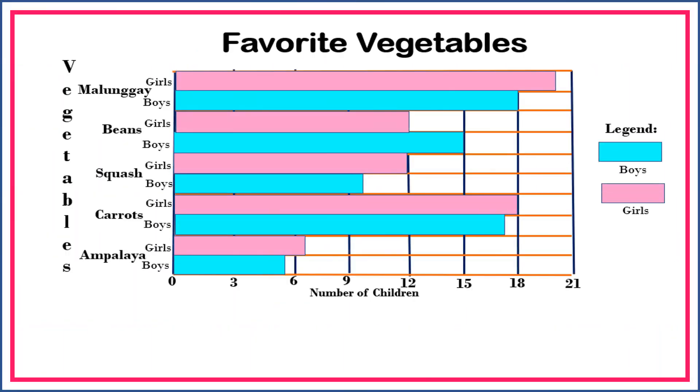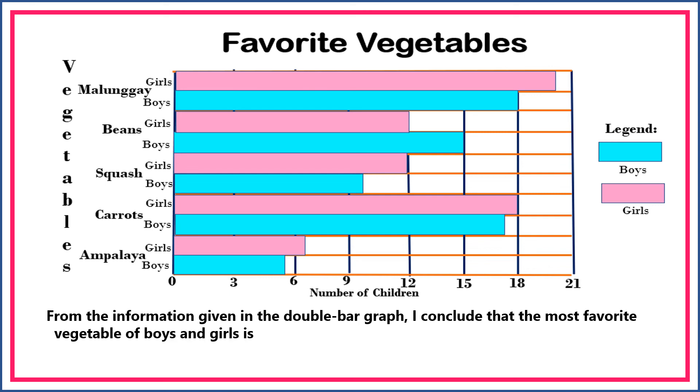Another example, draw an inference based on the data presented in this double bar graph. What is your inference? Very good. From the information given in the double bar graph, I conclude that the most favorite vegetable of boys and girls is Malungay. There are a total of 38 children who chose Malungay as their favorite vegetable.